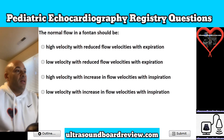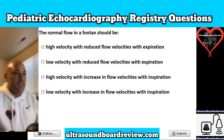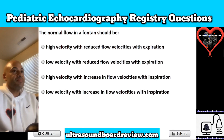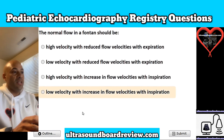Question 12. The normal flow in a Fontan should be: A, high velocity with reduced flow velocities with expiration; B, low velocity with reduced flow velocities with expiration; C, high velocity with increase in flow velocities with inspiration; or is it D, low velocity with increase in flow velocities with inspiration? The answer is D, low velocity with increase in flow velocities with inspiration.